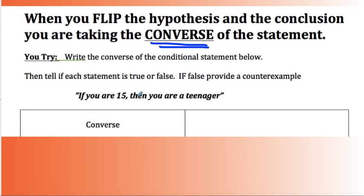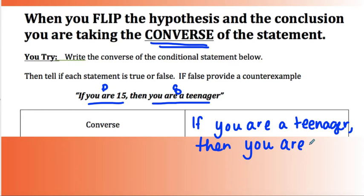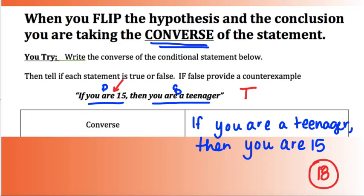Let's look at another conditional statement: 'If you're 15, then you're a teenager.' Here, p (the hypothesis) is 'you are 15,' and q (the conclusion) is 'you are a teenager.' To write the converse, I flip them: 'If you are a teenager, then you are 15.' The original conditional is true — if you're 15, yes you're a teenager. But the converse changes the meaning. You could be a teenager and not be 15; you could be 18. So 18 is a counter-example, making the converse false.